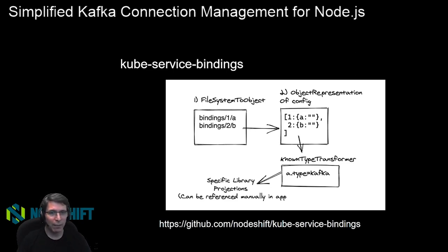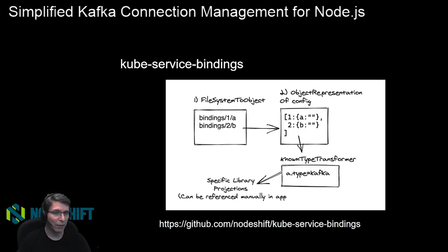It reads that data in. But because there are different clients, you're going to want that data in a different format depending on the client you're using. So it's also aware of the different clients — it knows the Kafka.js client, it knows the NodeRD Kafka client, and it knows how to convert the data read from those service binding files into the format specific to the library you want to use.